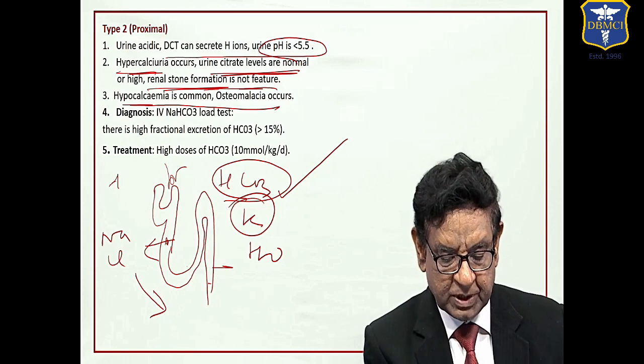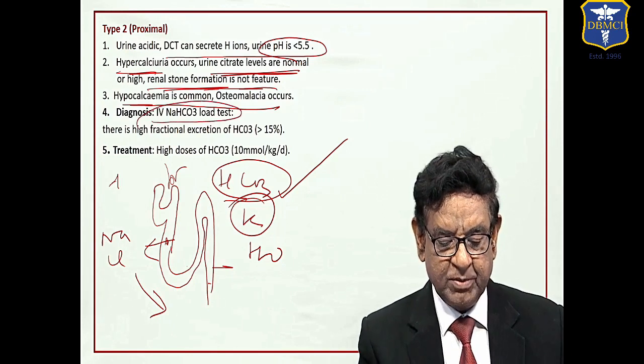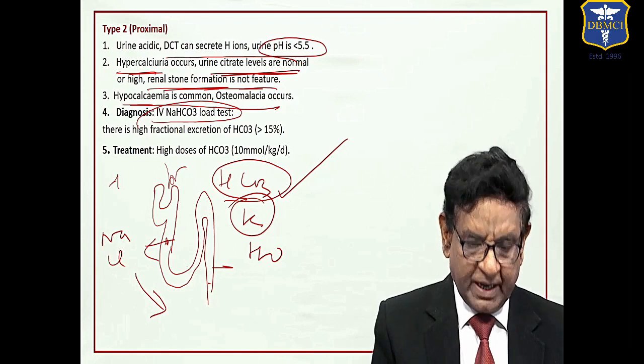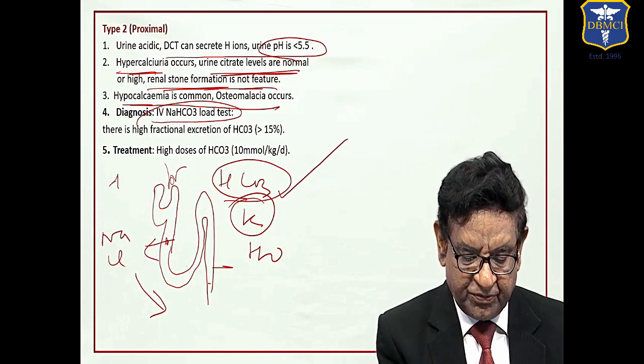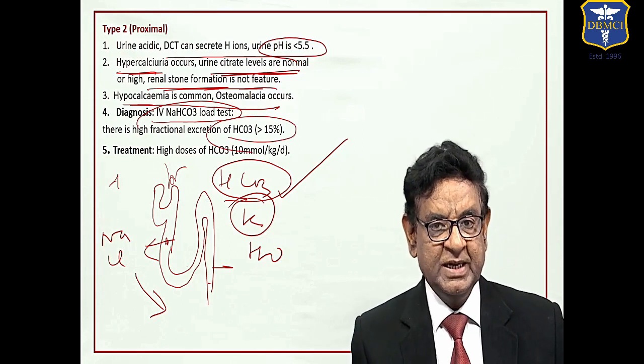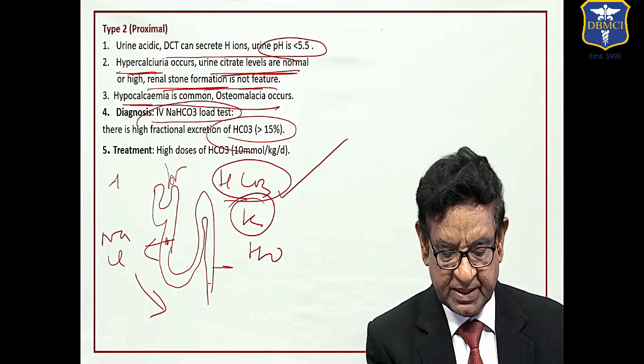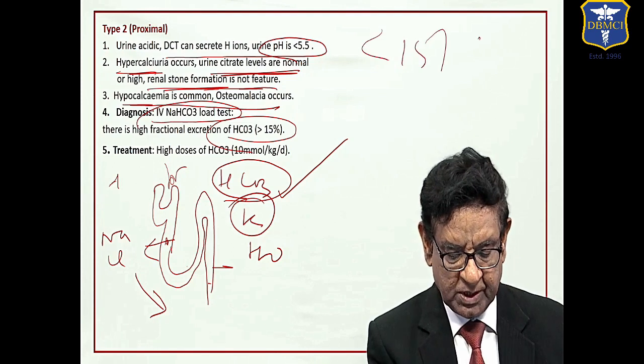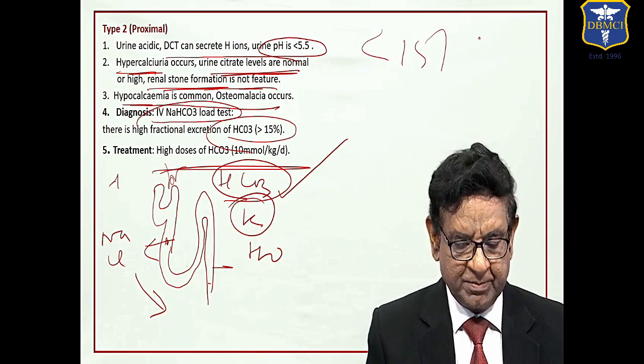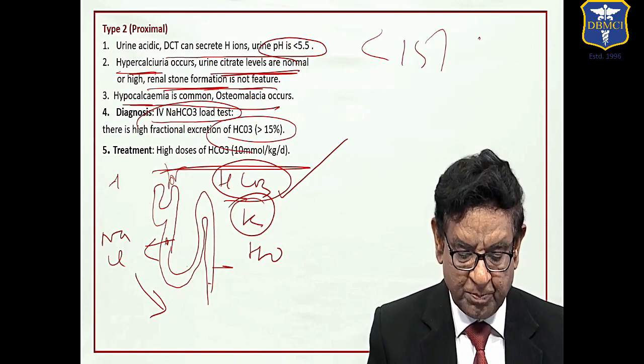What test we do? We do IV soda bicarb loading test. We give soda bicarb IV and in this case the fractional excretion of bicarb will be more than 15 percent. In normal persons it is less than 15 percent. Treatment is high dose of soda bicarb, maybe even more than 10 millimole per kg per day.